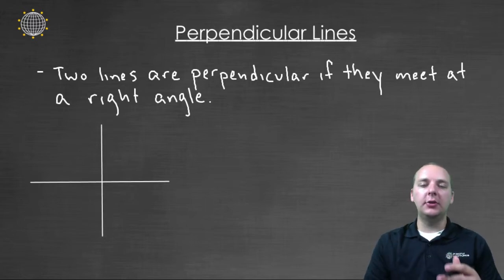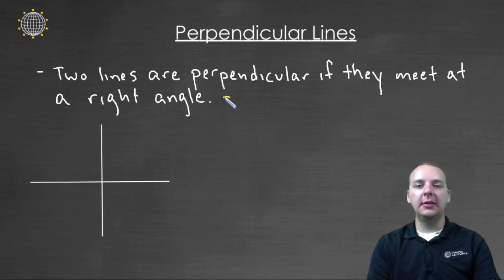So we'd say that two lines are perpendicular if they meet each other at a right angle. A right angle is basically a ninety degree angle, okay this is a ninety degree angle.